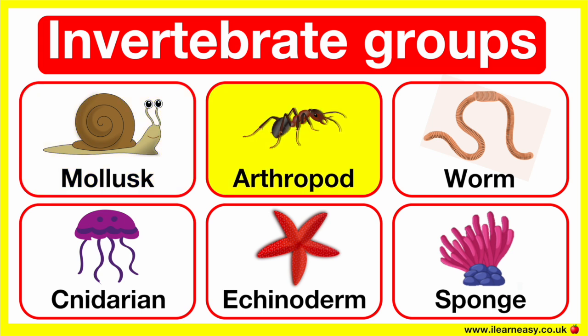Arthropods live on land. There are many different types of arthropods. For example, ants, spiders, crabs, and millipedes.